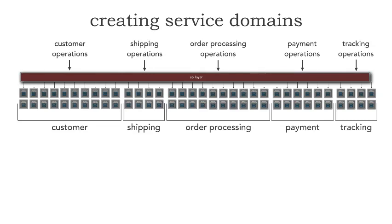Let me show you a couple of techniques for creating service domains in a physical type of manifestation. The first one that I really like is to leverage this API layer as a federated API. This not only serves the problem of eliminating a single point of failure and also performance bottlenecks and scalability issues, but also now we have well-defined API layers that have all the RESTful endpoints that have to do with that particular domain — a customer API layer, a shipping API, an order processing API, a payment API, and a tracking API.